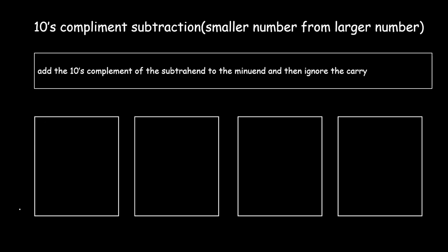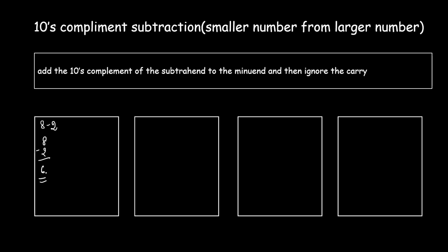Let's find the result of 8 minus 2. You are subtracting a smaller number from a bigger number. In regular subtraction, 8 minus 2 is 6. Now let's see how we subtract these numbers using the tens complement method.